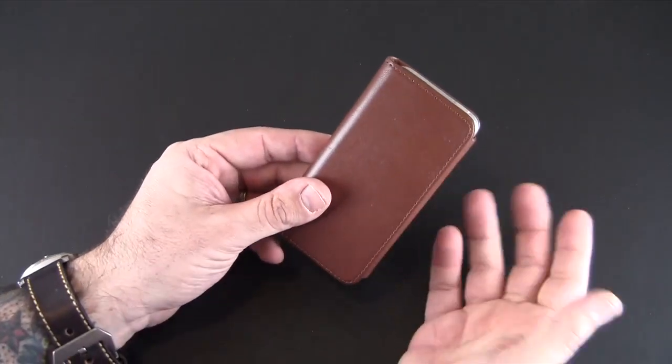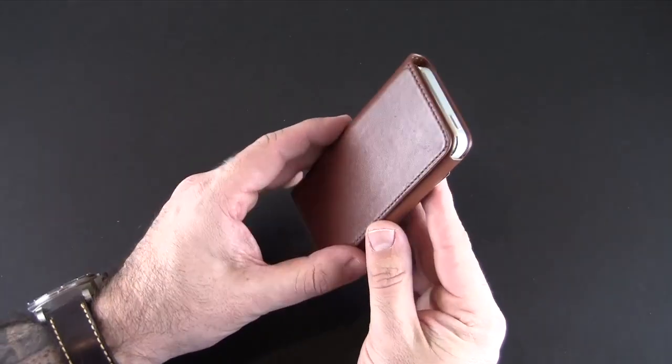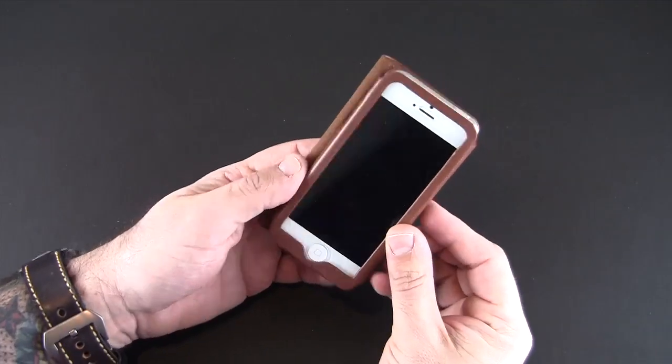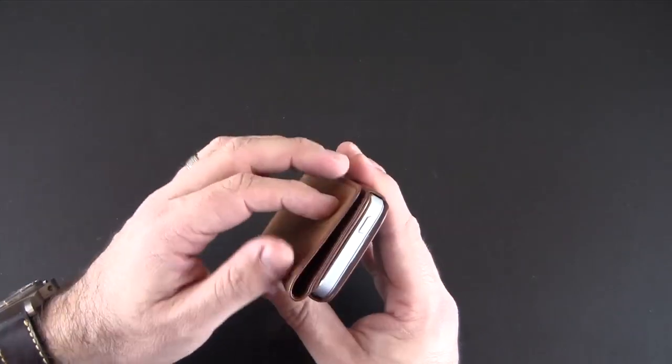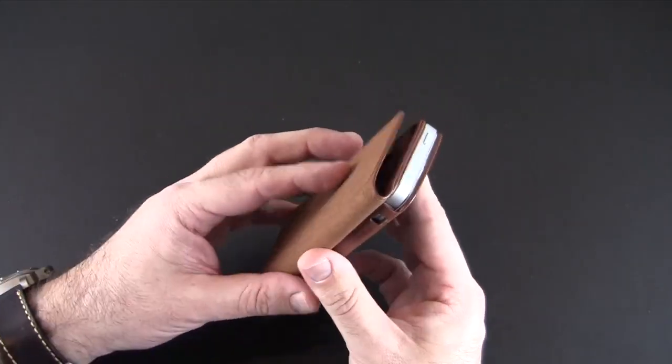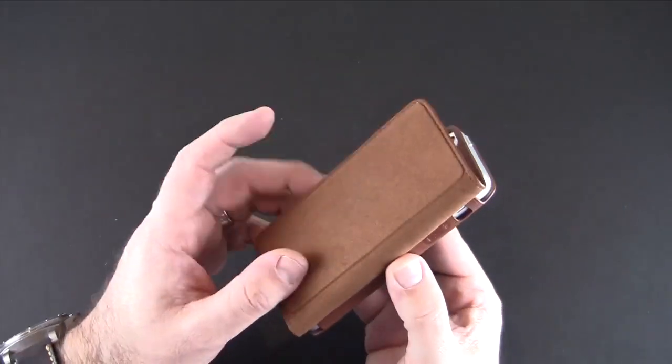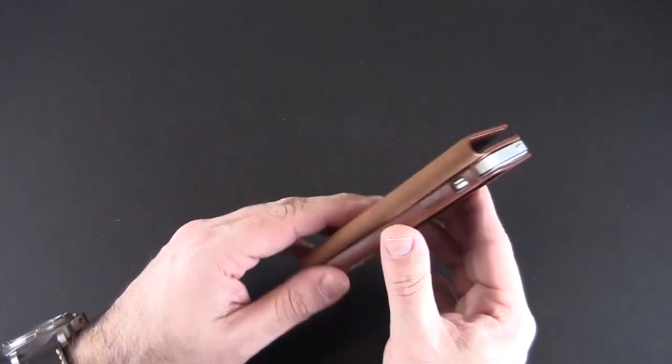There is no earpiece cutout on this which to me is somewhat unfortunate. It means you're going to have to flip this around and hold it in this position to use the phone. You could run into issues with this flap covering that secondary microphone, but you don't have to worry about people seeing your identification when you're holding your phone.